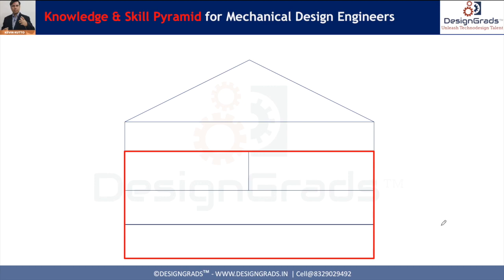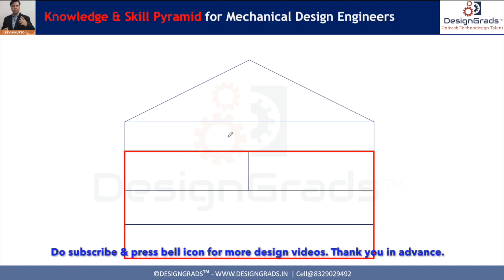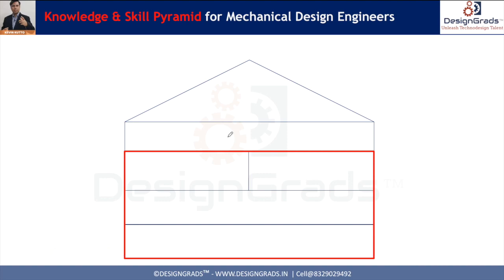Let's divide this pyramid into two parts. The first part is foundational elements and the second part is add-on elements. The foundational elements are shown in red, and everything outside that red boundary is the add-on elements. Foundational elements are needed by all mechanical design industries irrespective of the domain, product, or industry type, while add-on elements change as per the type of industry and products.